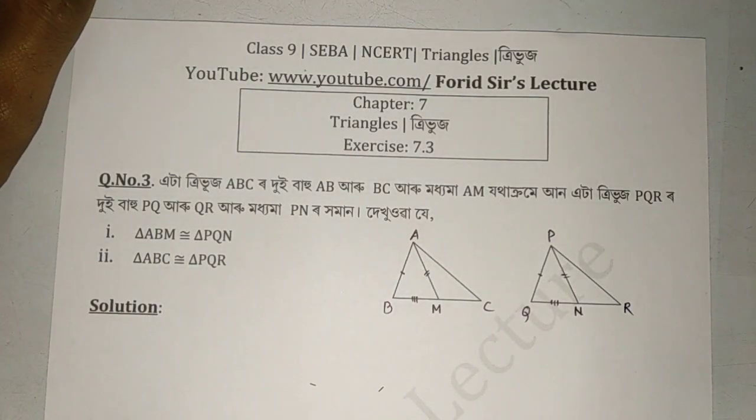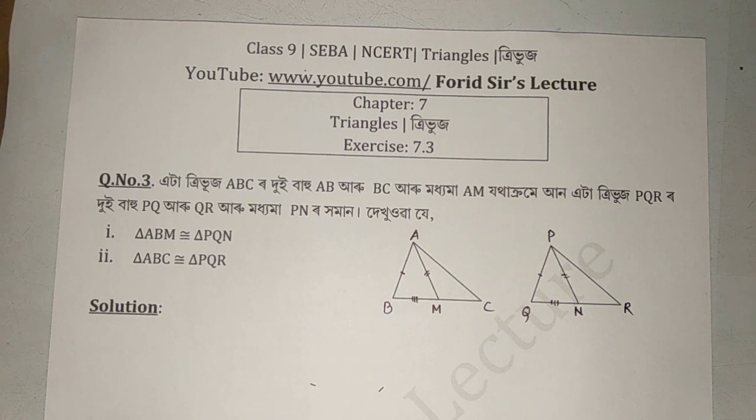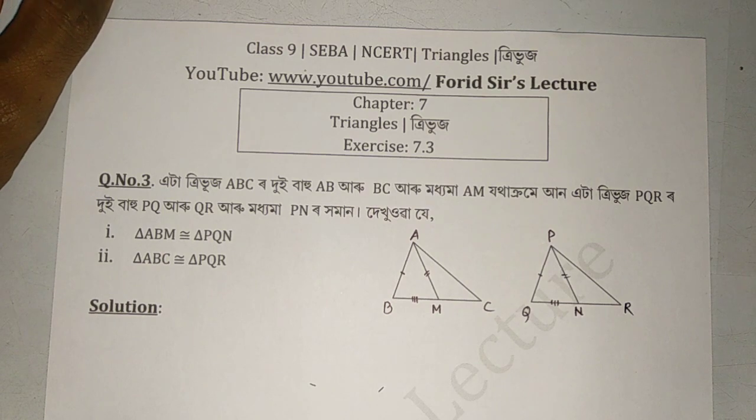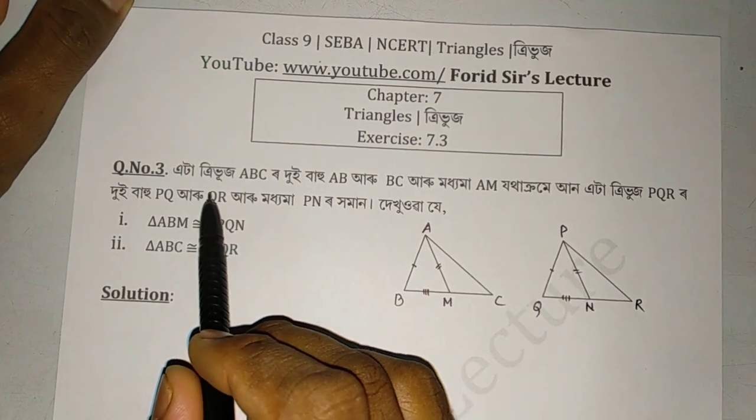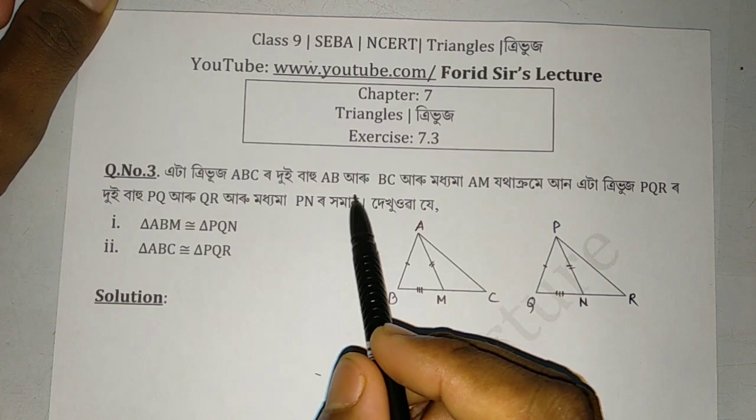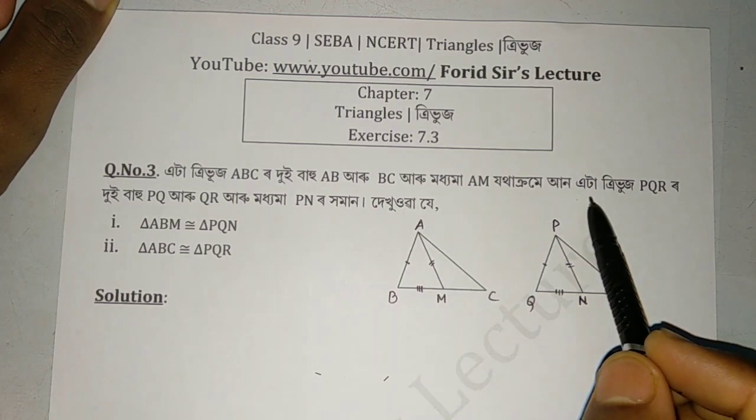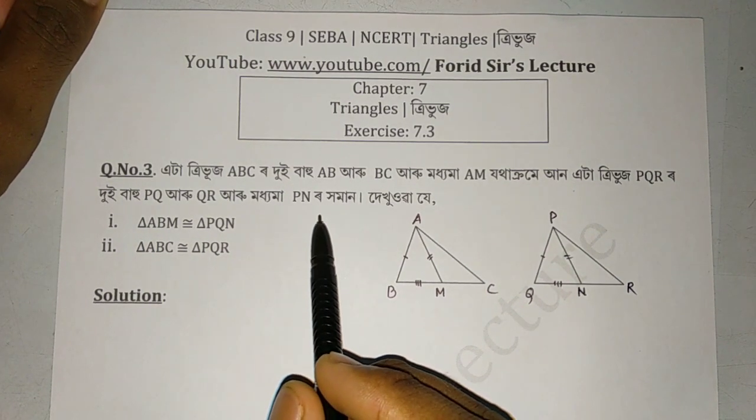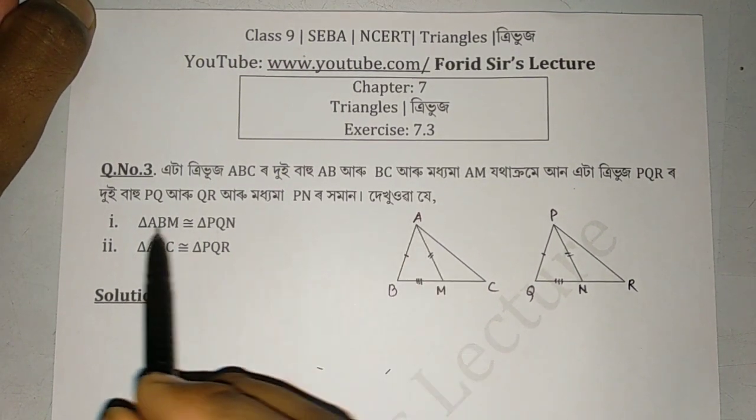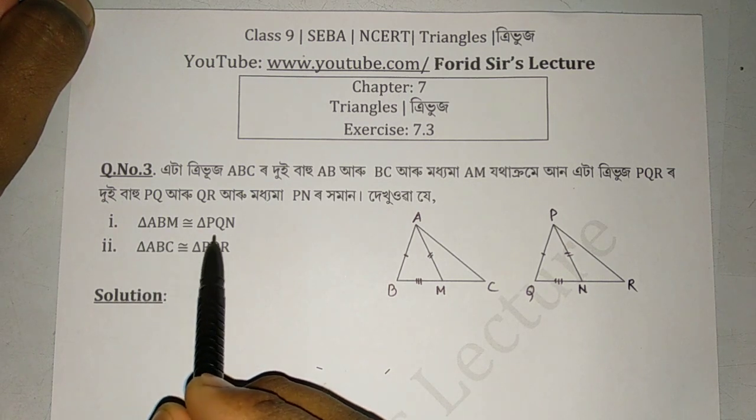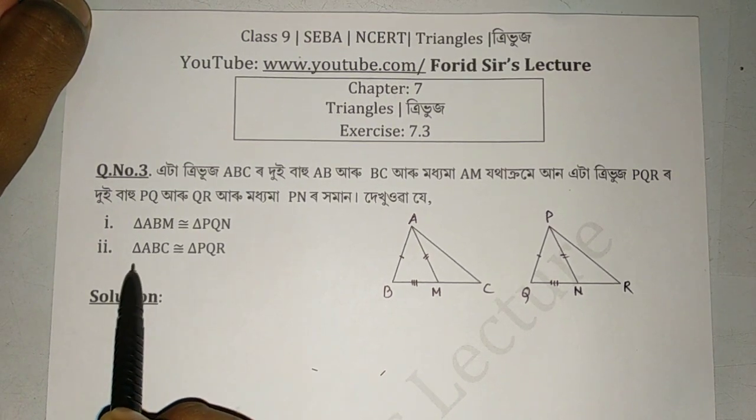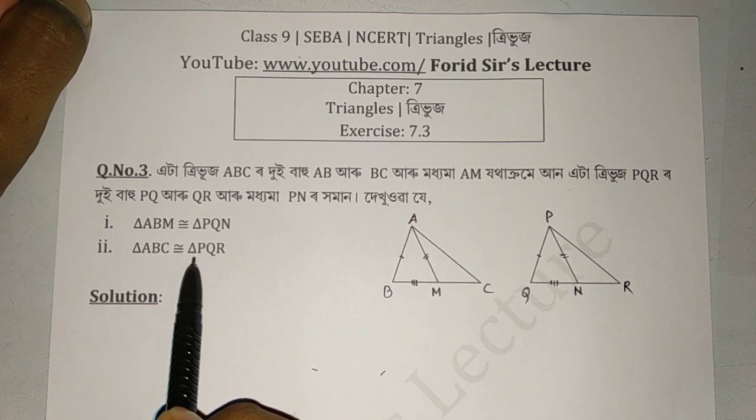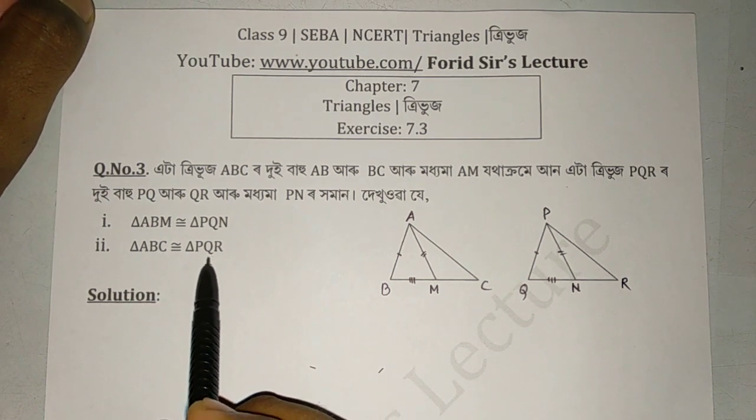Hello everyone, welcome to my channel Forid Sir's Lecture. I am solving Exercise 7.3, question 3. The problem involves triangle ABC where M is a point such that AM bisects angle A, and triangle PQR where N bisects angle P. We need to prove that triangle ABM is congruent to triangle PQN, and triangle ABC is congruent to triangle PQR.